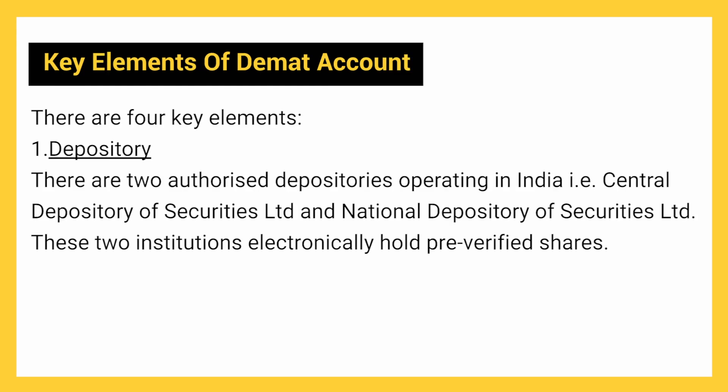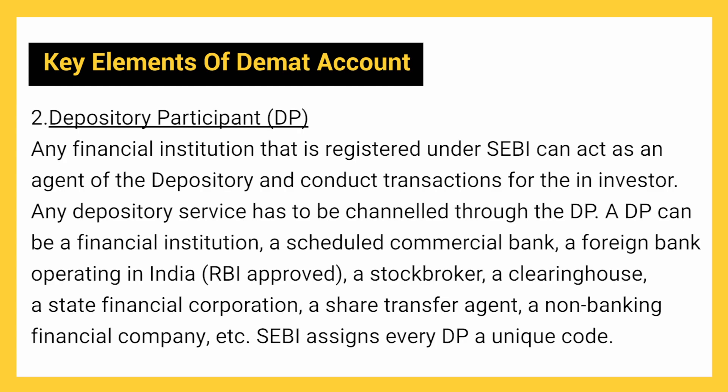Key elements of a DMAT account — there are four key elements. The first is Depository: there are two authorized depositories operating in India, Central Depository of Securities Limited and National Depository of Securities Limited, which electronically hold pre-verified shares. The second is Depository Participant (DP): any financial institution registered under SEBI can act as an agent of the depository and conduct transactions for the investor. Any depository service has to be channeled through the DP. A DP can be a financial institution, a scheduled commercial bank, a foreign bank operating in India, a stock broker, a clearing house, a state financial corporation, a share transfer agent, a non-banking financial company, etc. SEBI assigns every DP a unique code.